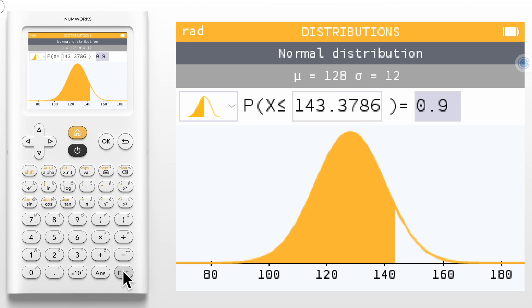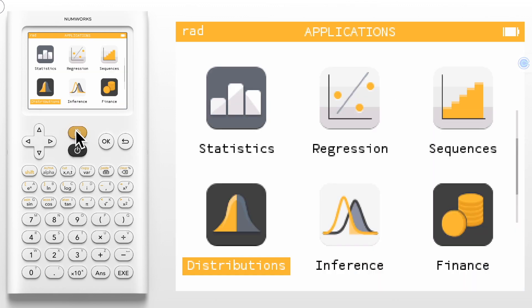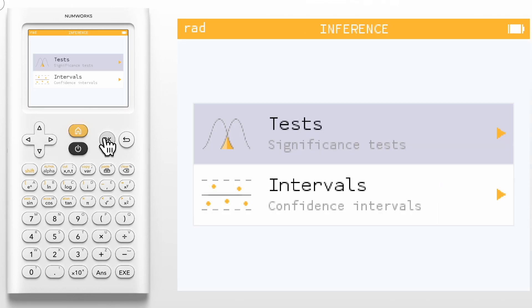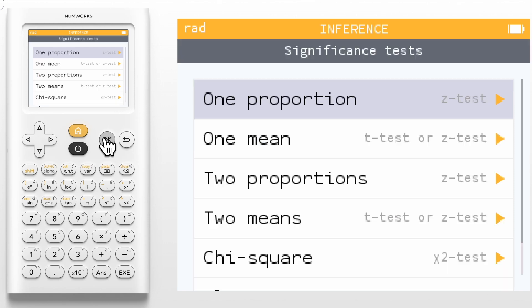Now it's time for some inference. Let's head back to the home page and enter the Inference app. Your students no longer have to sift through confusing calculator syntax to determine which test or interval they need to use. Instead, tests and intervals are split into two different sections. Let's check out the tests. Here we will also see full phrases like one proportion z test or two means t or z test. For example,